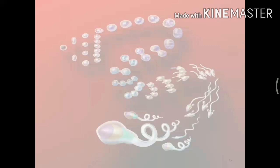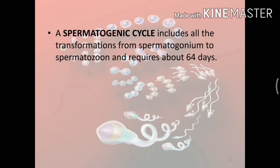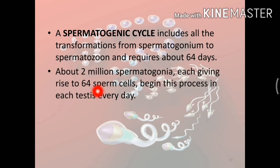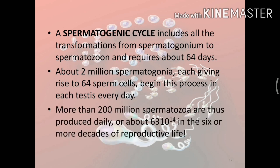A few important facts about spermatogenesis: a spermatogenic cycle includes all transformations from spermatogonium to spermatozoa and requires about 64 days. About 2 million spermatogonia, each giving rise to 64 sperm cells, begin this process in each testis every day. More than 200 million spermatozoa are thus produced daily, or about 6.3×10¹⁴ in six or more decades of reproductive life.